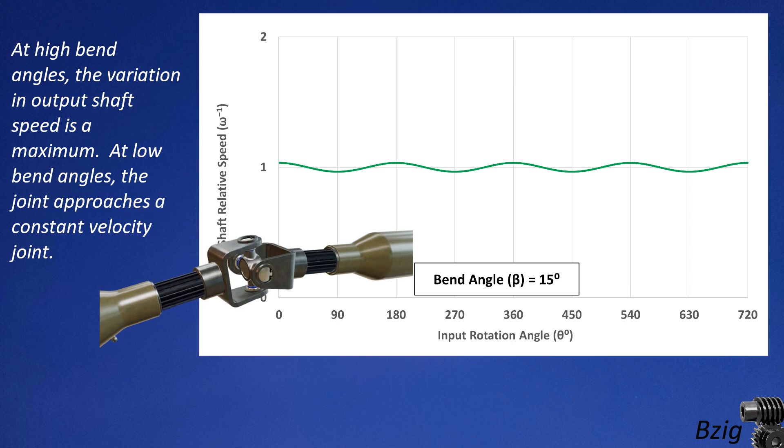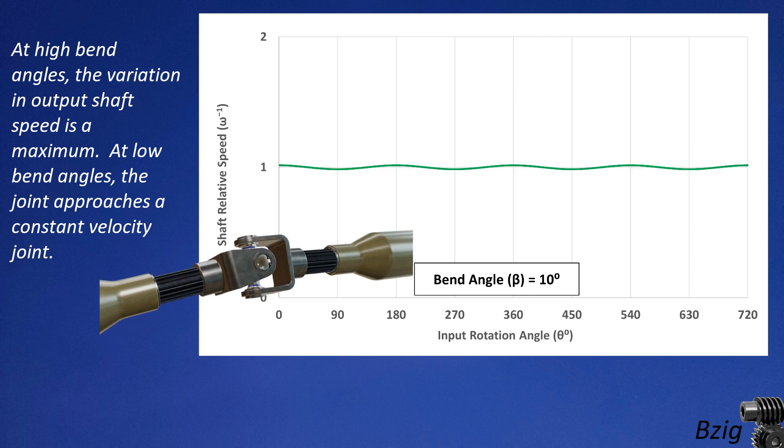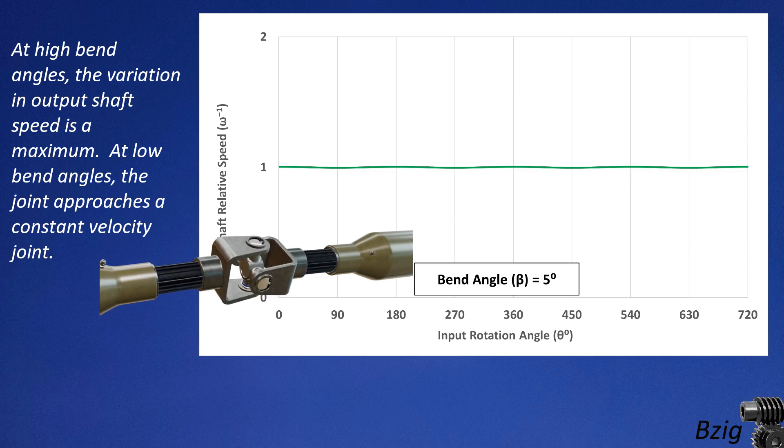And at very low bend angles, the variation in output shaft velocity becomes very small. As the bend angle approaches zero, the universal joint approaches the behavior of a constant velocity joint.